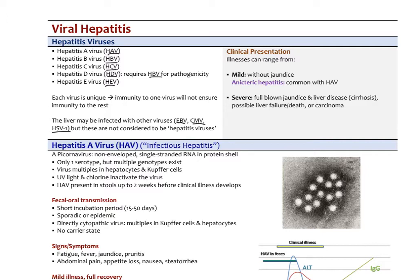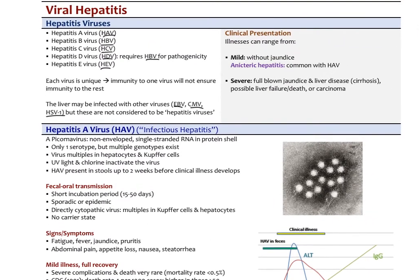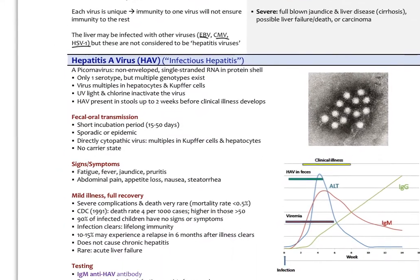We see jaundice often in hepatitis A. Severe could be full-blown jaundice, liver disease, cirrhosis, possible liver failure, death, or even liver cancer over time. It varies on the type of virus, the person's immune response, and how long they've had the infection.